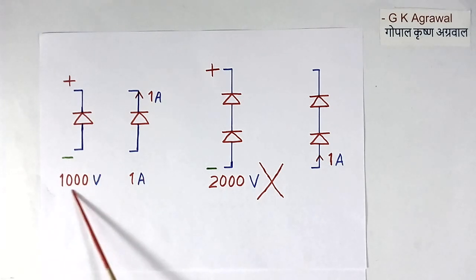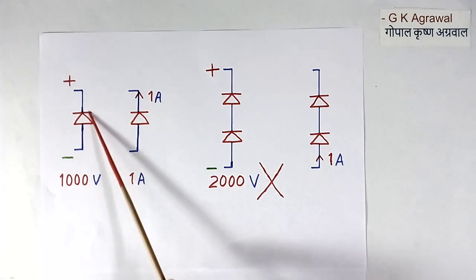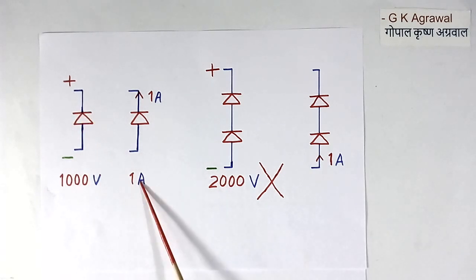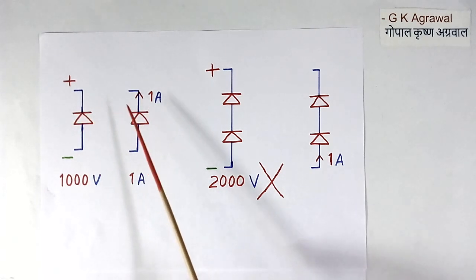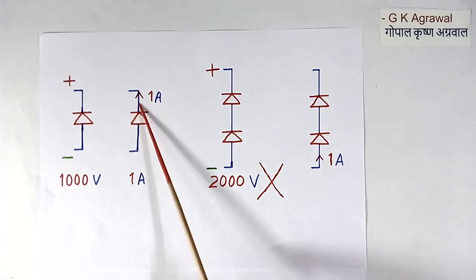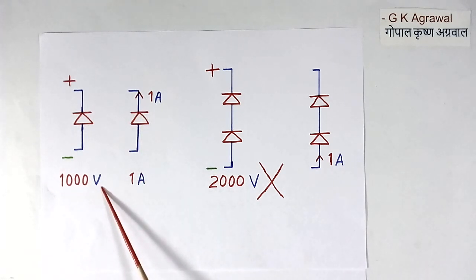When you apply 1000 volt across this, no current can flow. And when 1 ampere current is flowing, then there will be a forward voltage drop, and reverse voltage will not be there. So either 1000 volt or 1 ampere. Any one is possible at a time.